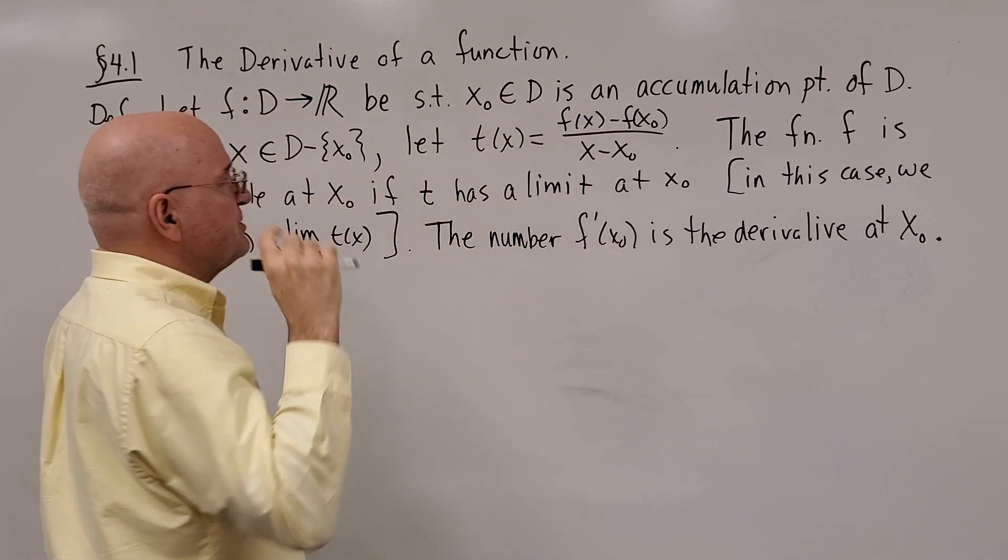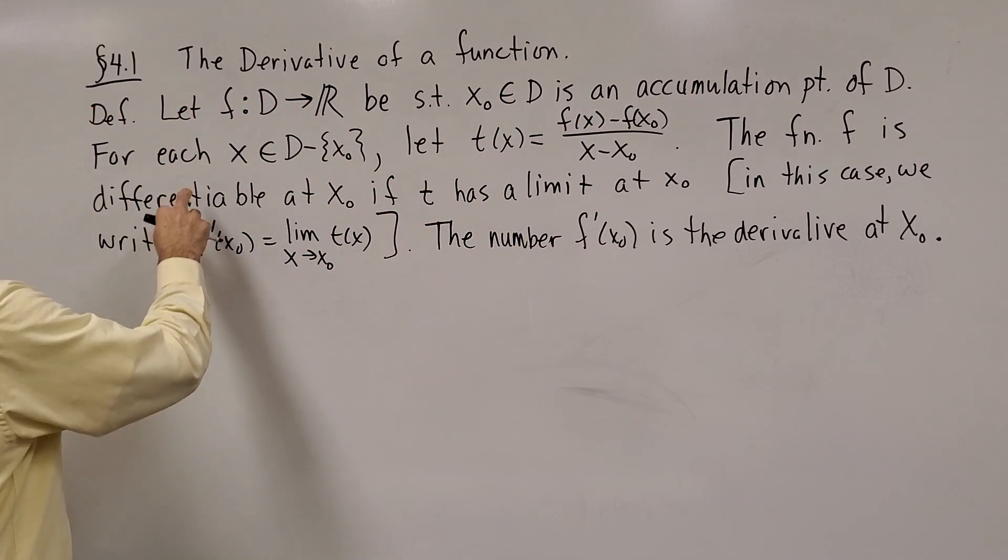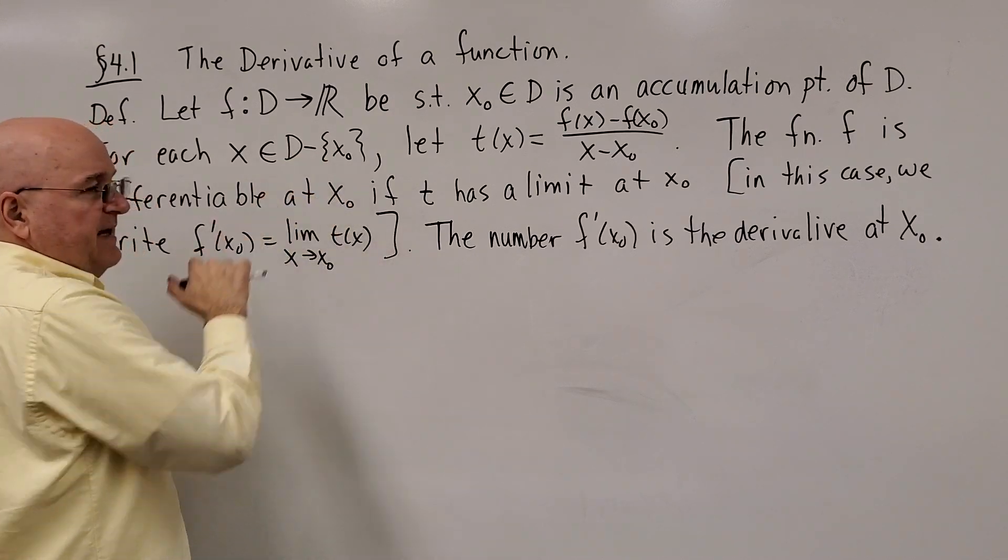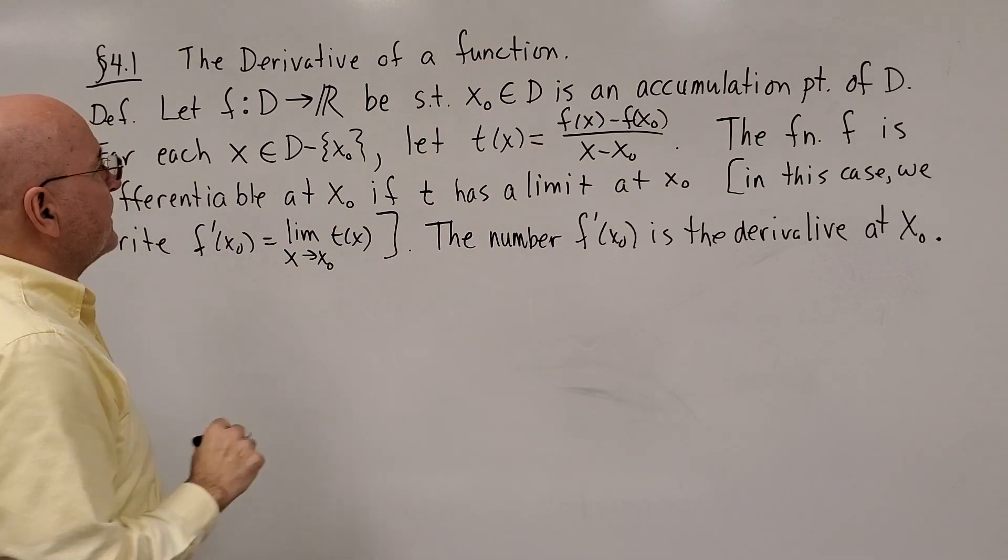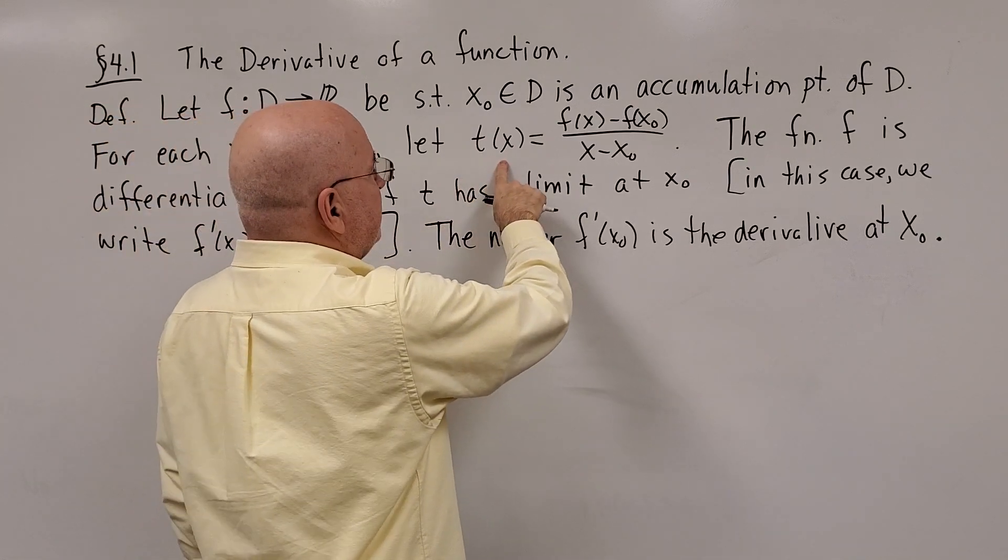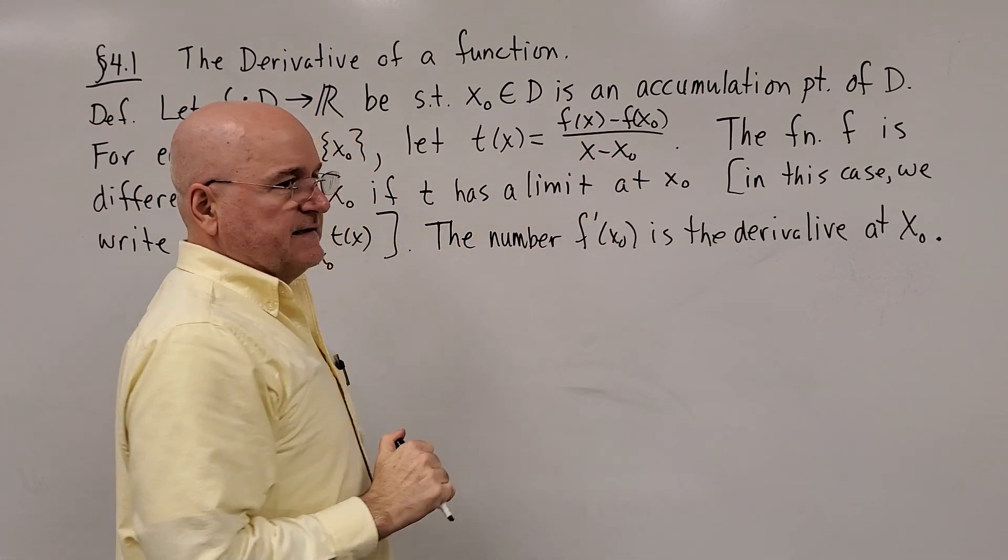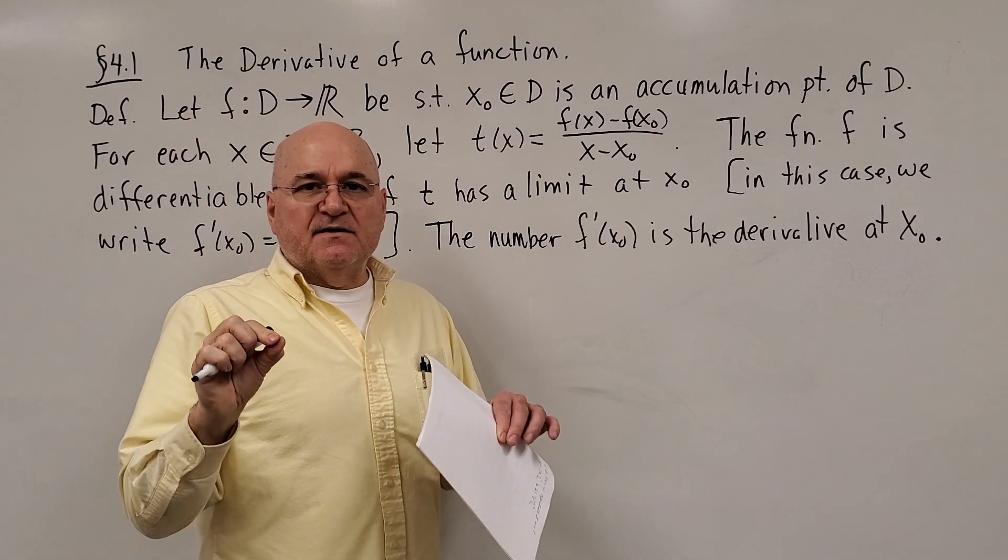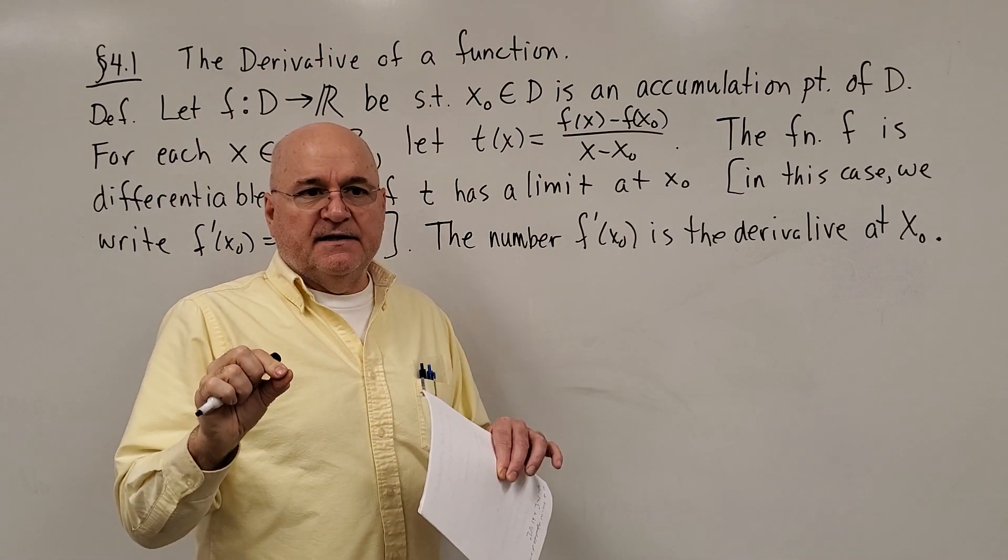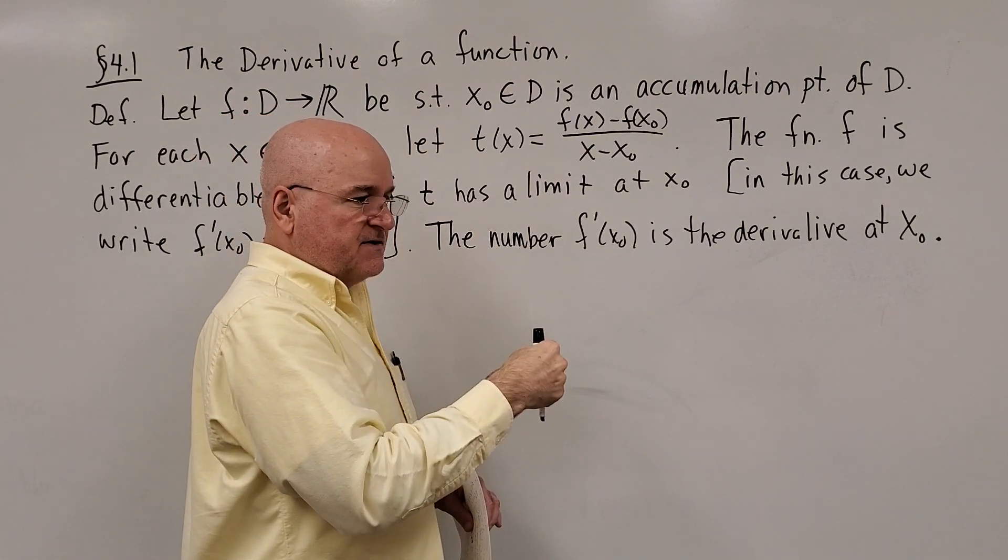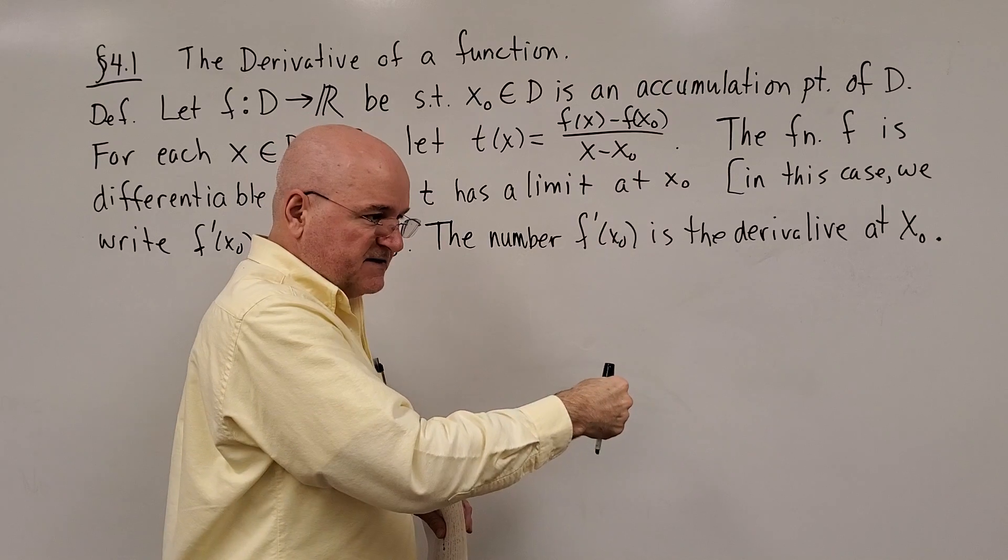For every x in the domain different from x not, let this function t of x be f of x minus f of x not over x minus x not. That is exactly the slope of the line that connects the point x, f of x with x not, f of x not.